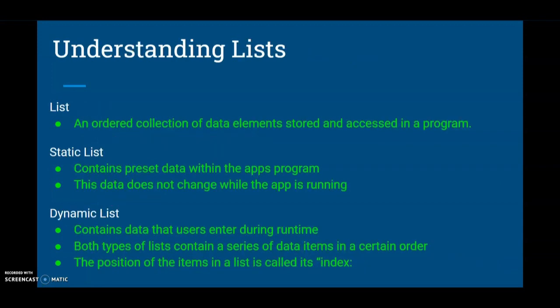To understand our lists, we need to understand the two different types available when designing an app. A list is any ordered collection of data elements that can be stored and accessed within our program. Today we'll use a static list, which contains preset data within the app's program that cannot change while the app is running. A dynamic list, which we'll cover in a later activity, contains data the user can enter during runtime. Both types contain data items in a specific order, known as the position or index.